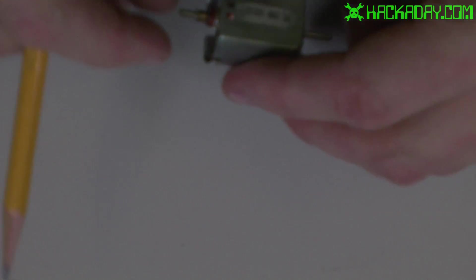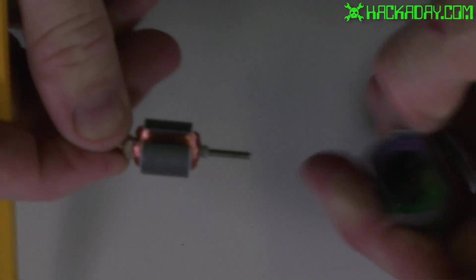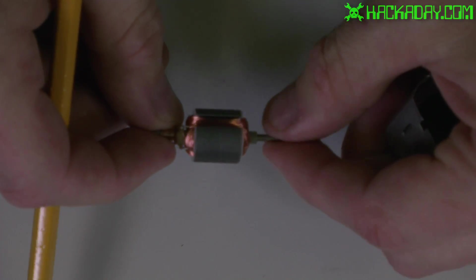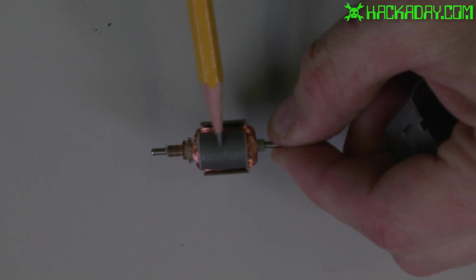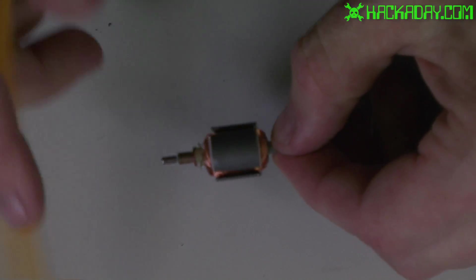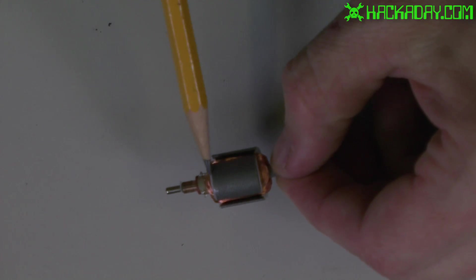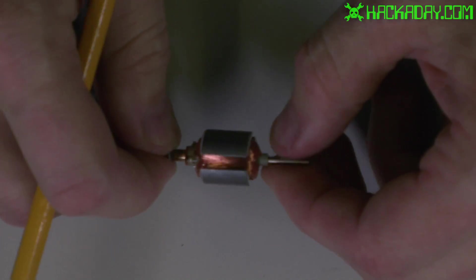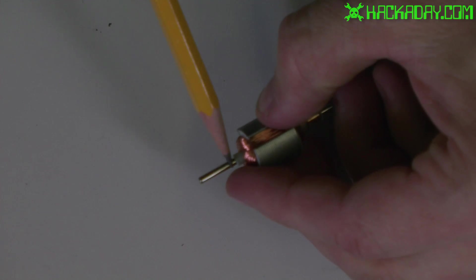Going on to the motor, inside here we have what is called the armature and this is a bunch of very thin pieces of steel that are force fit onto the motor shaft.